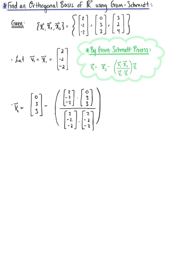This is all still multiplied by vector v₁. Computing these dot products, we still have vector x₂ in the front. The dot product in the numerator is producing 0 - 6 - 6, all divided by 4 + 4 + 4, multiplied by vector v₁.